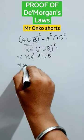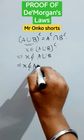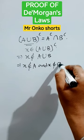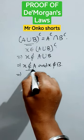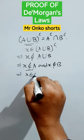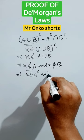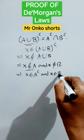So from here we can say X doesn't belong to A and X doesn't belong to B. Now this clearly implies X belongs to A complement and X belongs to B complement.